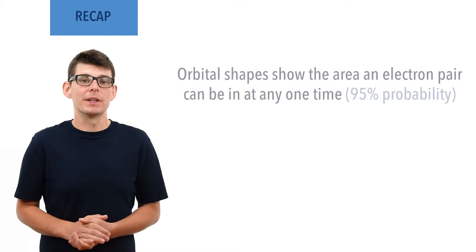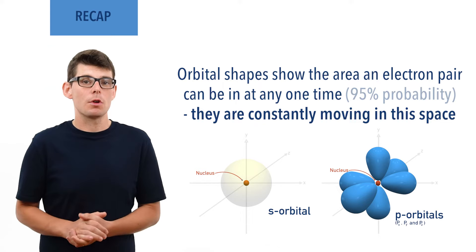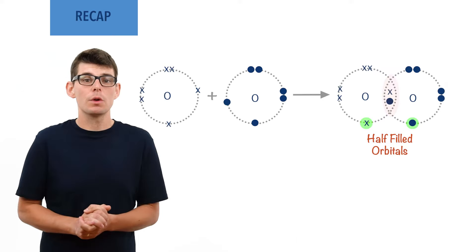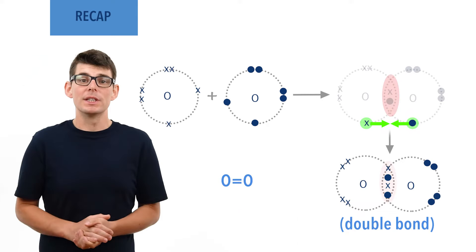There are different shaped orbitals electrons can be in depending on their distance from the nucleus. The orbital shape refers to the area that an electron pair is likely to be in at any one time — they are essentially constantly moving around within that space. At this level, S and P shaped orbitals are the ones most commonly studied. Other half-filled atomic orbitals can sometimes also overlap or merge, creating another bonding orbital between the two atoms and leading to a double bond. The atoms are harder to split apart when double bonded together, although the second bond is weaker than the first single bond.